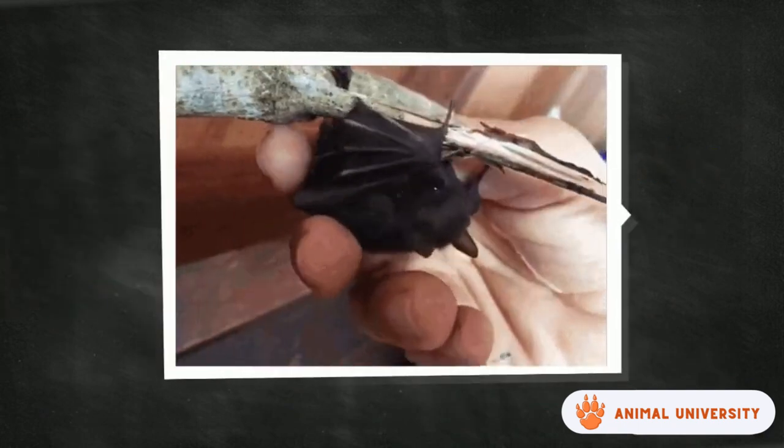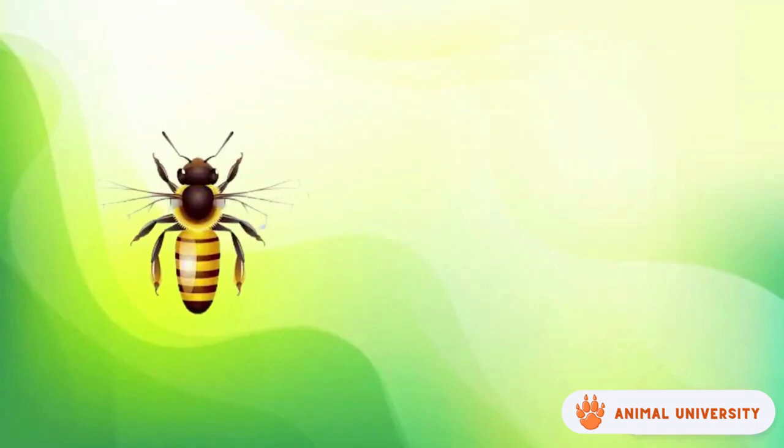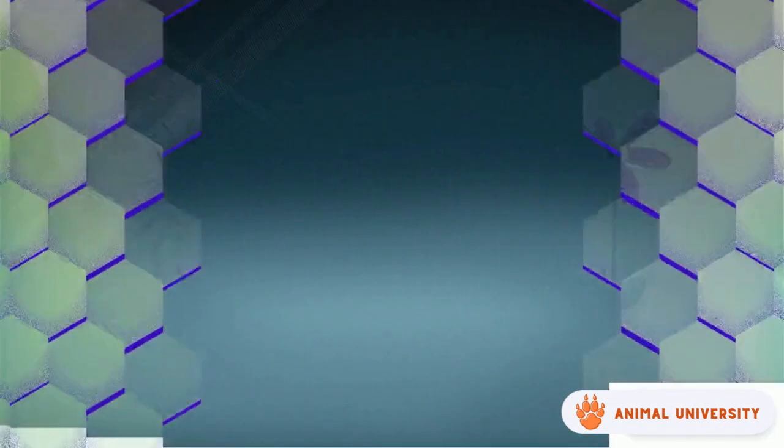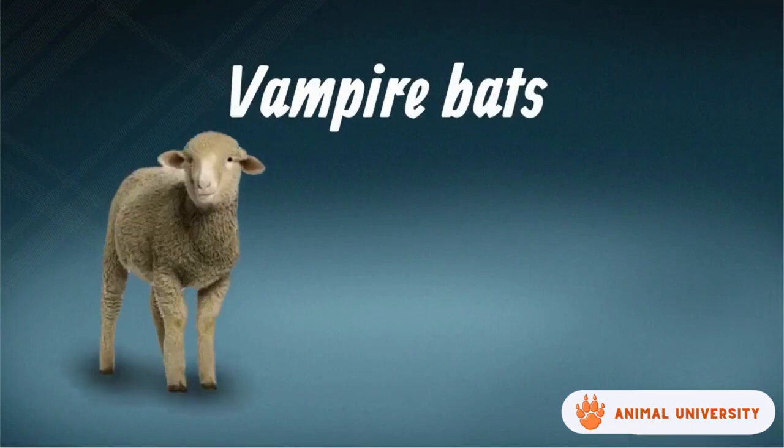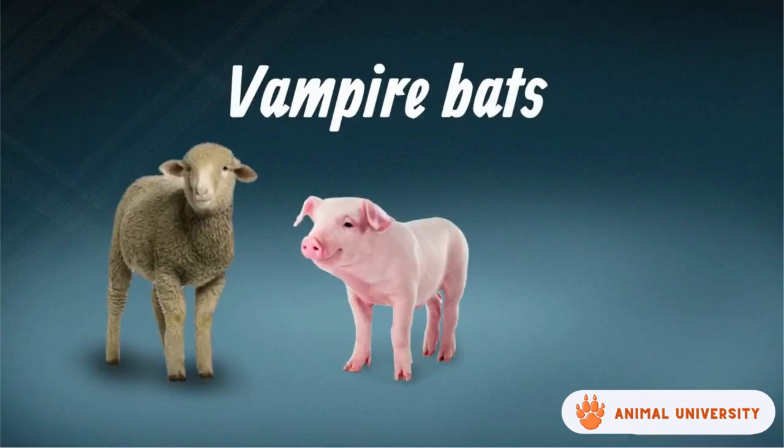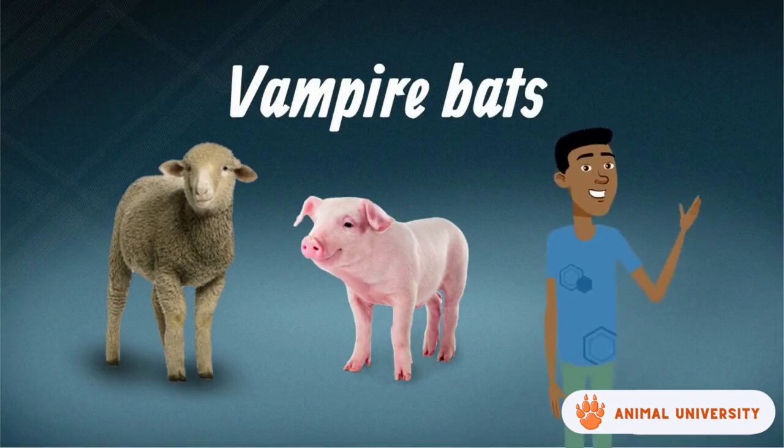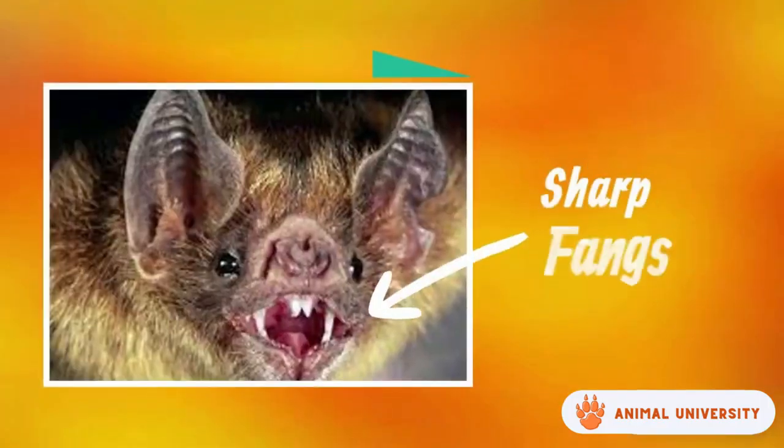Their thumb extends from the wings, which helps in climbing trees and also helps in takeoff for bats. Majority of bats eat insects, but some species consume fruits and nectar while vampire bats consume blood from sheep, pigs, and even humans just to give you guys nightmares.